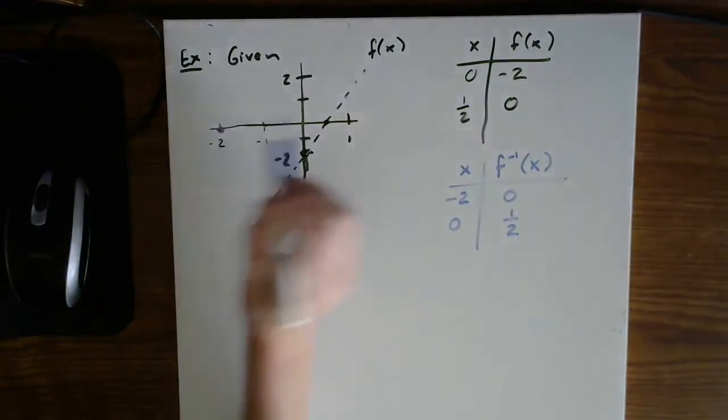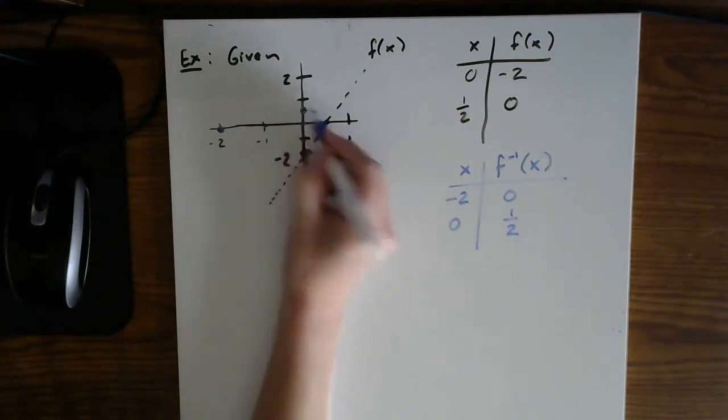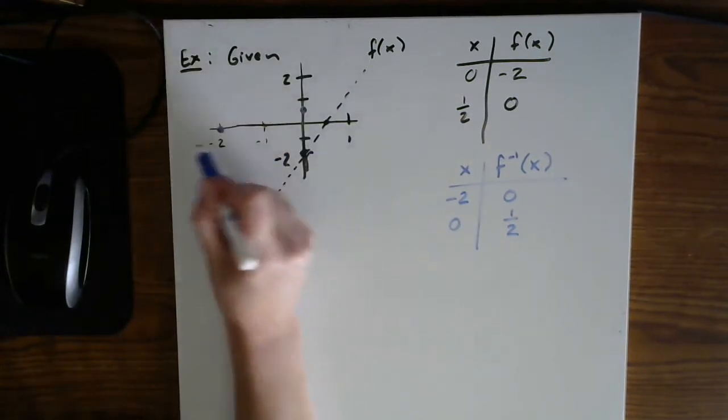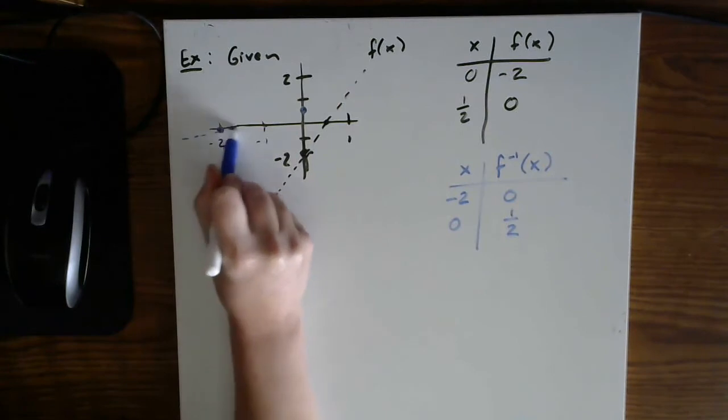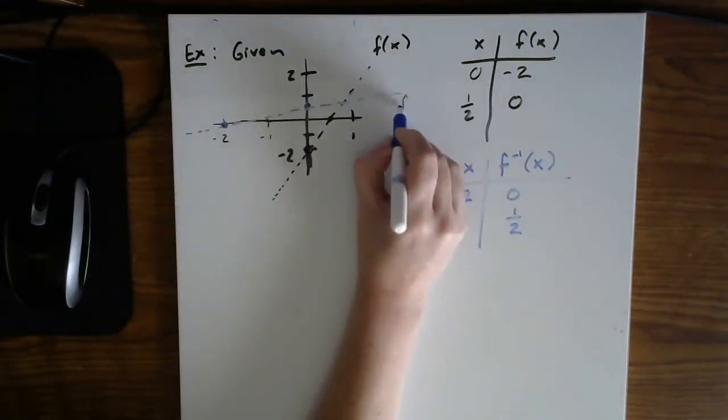So now x is at negative two, zero. And then the other point is zero, one half. So here is our inverse function. And let's label it.